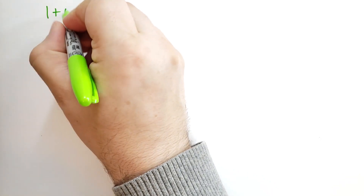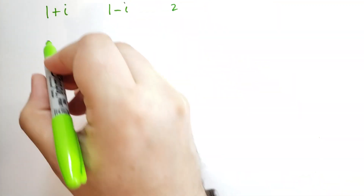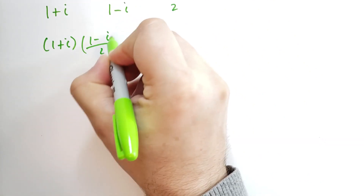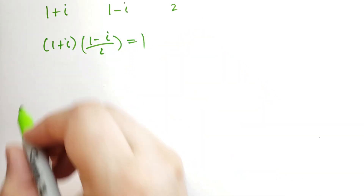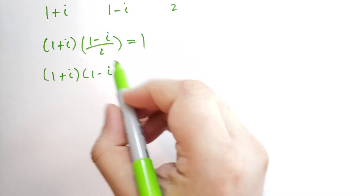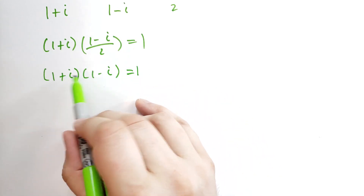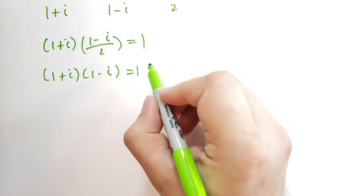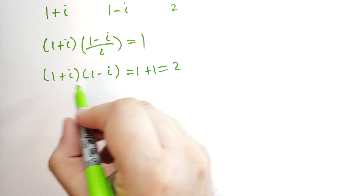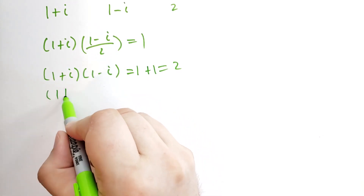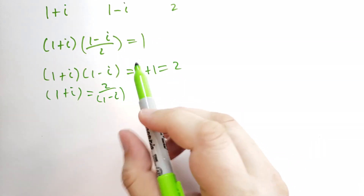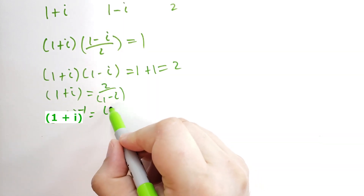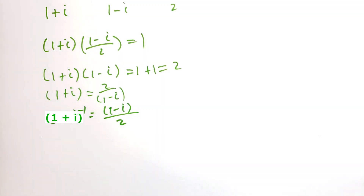Let's do a little example: what's the inverse of 1 plus i? The conjugate is 1 minus i, and A squared plus B squared equals 2. So 1 plus i times 1 minus i, all over 2, should give you 1. If we multiply 1 plus i times 1 minus i, the i terms cancel — plus i and minus i cancel — and plus i times minus i gives minus i squared, which is 1. So we get 1 plus 1 equals 2, and the multiplicative inverse of 1 plus i is 1 minus i, all over 2.